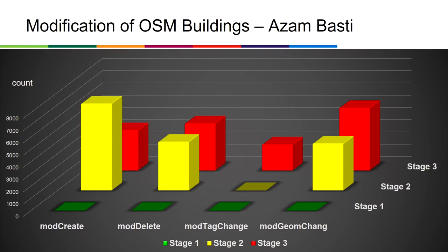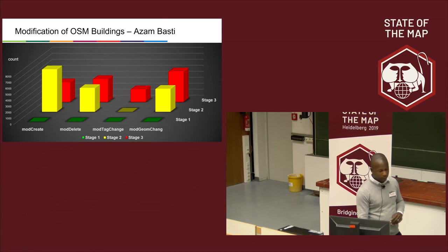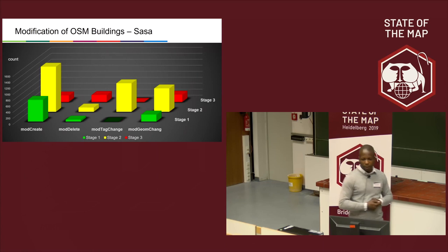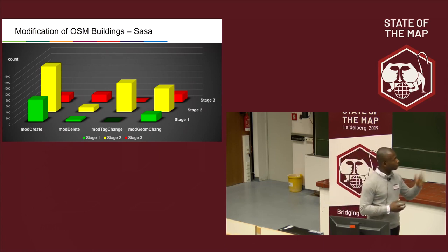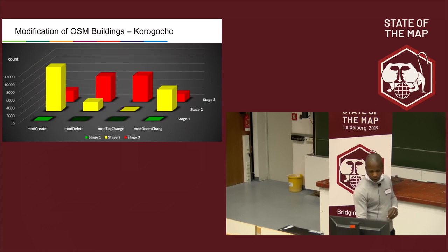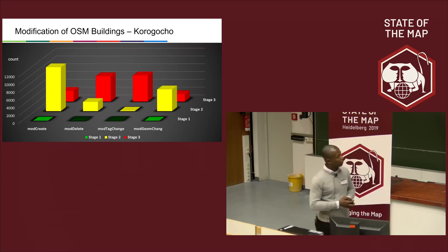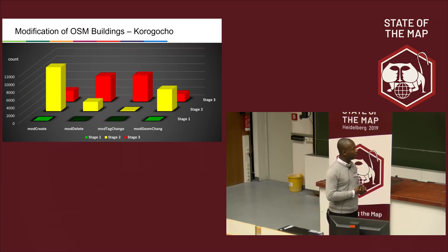Looking at modifications within the stages: for Azambasti, a lot of work was done in stage three — the red bars confirm the difficulty in stage two, which required substantial fieldwork in stage three. For Shasha, not as much work was done in stage three. For Korogocho, there appears to be a lot of work in tagging and deleting.